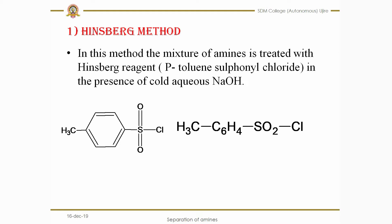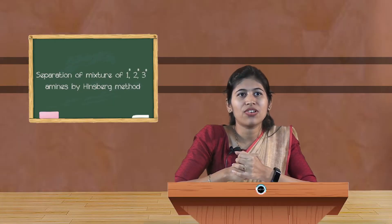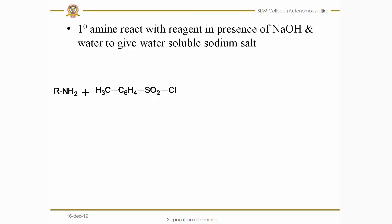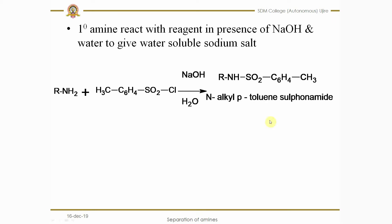For a mixture of primary, secondary, and tertiary amines, when you add the Hinsberg reagent in the presence of sodium hydroxide and water, let us discuss how it reacts with each one. First, when the primary amine — with the general formula RNH2 — reacts with the Hinsberg reagent in the presence of sodium hydroxide and water, one hydrogen on the amine is replaced by the Hinsberg reagent.